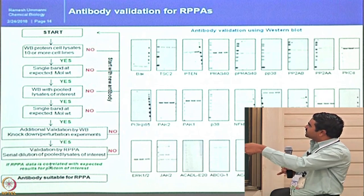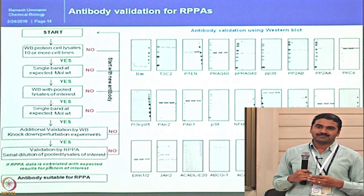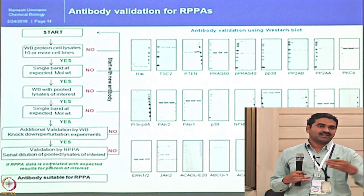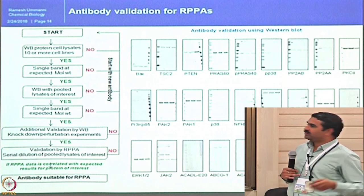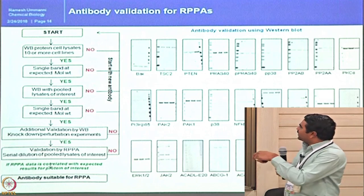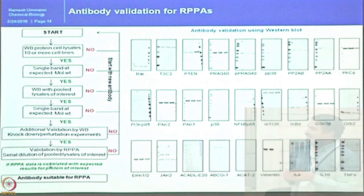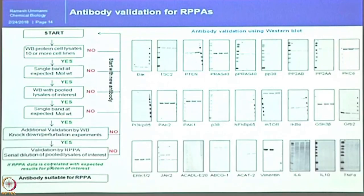If it passes those steps, it goes to RPPA validation. In RPPA, we validate by serial dilution of the samples — whether the antibody can detect 2-fold, 5-fold, or 10-fold dilution properly. If the RPPA data correlates with expected results from the protein of interest, we declare that it is useful for RPPA. Every antibody gets one of three codes: go ahead, use with caution, or not suitable. These are the three different words in the RPPA community. It's like a go/no-go system — these are the three words we exchange by emails.